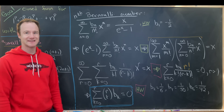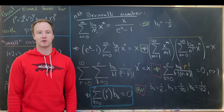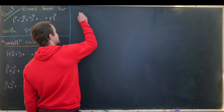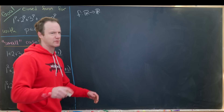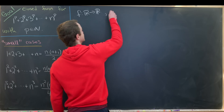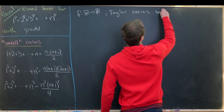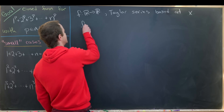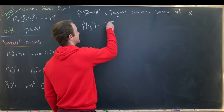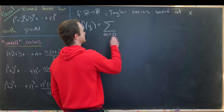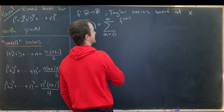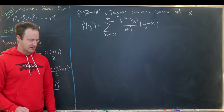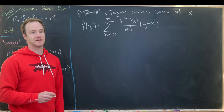Now that we're warmed up with Bernoulli numbers, let's see how they connect with the closed form for our power sum. We'll take a detour into calculus — specifically Taylor series from second-semester calculus. Let f be a nicely behaved function from ℝ to ℝ. Its Taylor series centered at x, with y as the variable, is: f(y) equals the sum as m goes from 0 to infinity of the mth derivative at x over m factorial, times (y - x)^m.